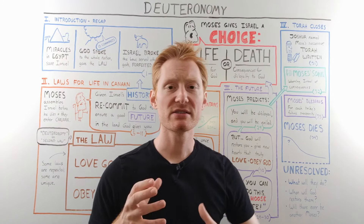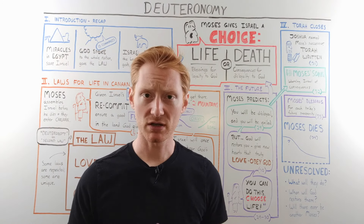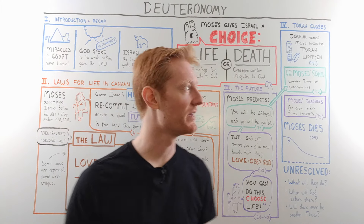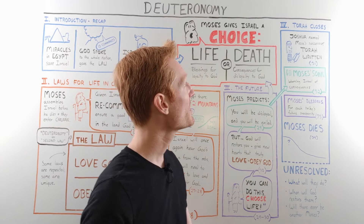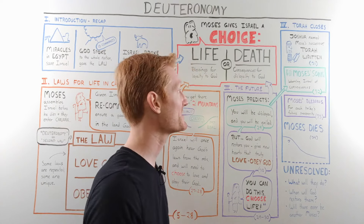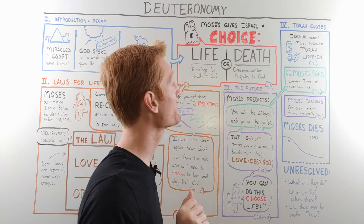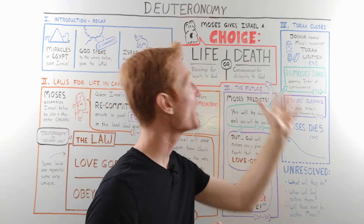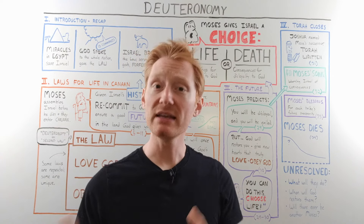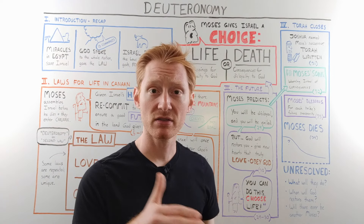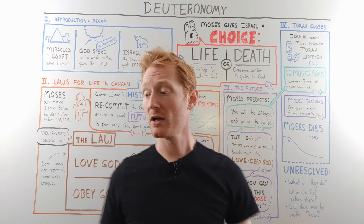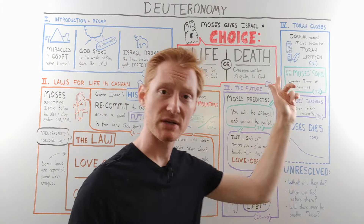In the fourth section, the Torah begins to come to a close — it's almost an appendix of different elements that need to be tied together. Moses is going to die and will not enter the promised land. So Joshua is named as Moses's successor; Joshua will be the one leading the people as they cross the river into the land of Canaan. Also, the law that Moses delivered to the people is written down — very important.